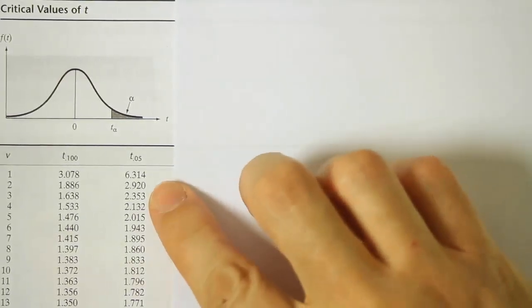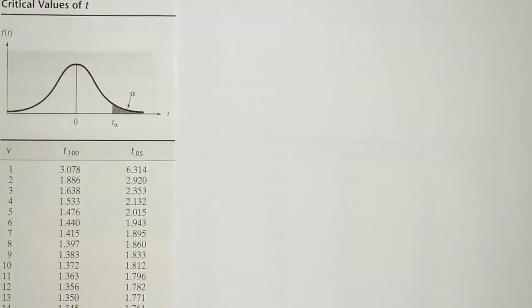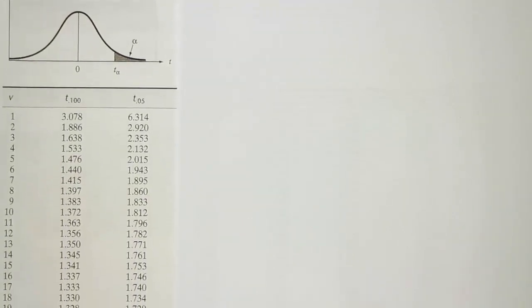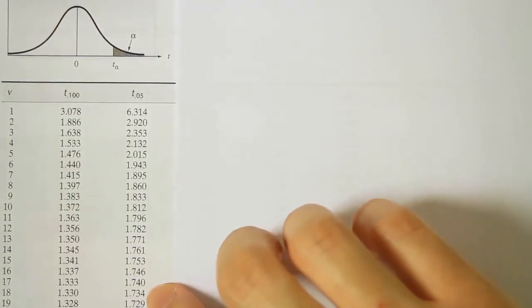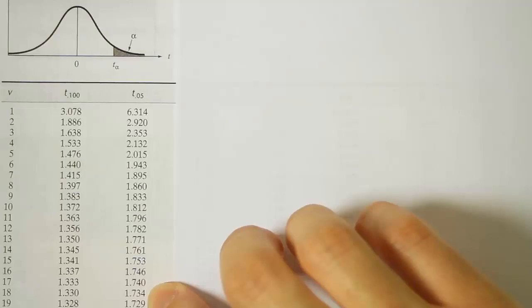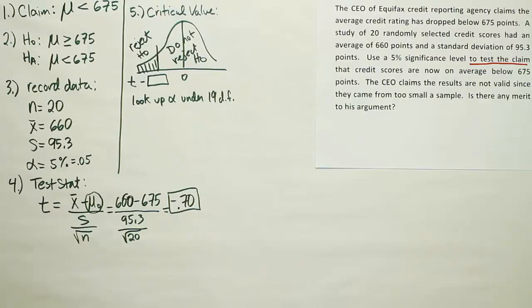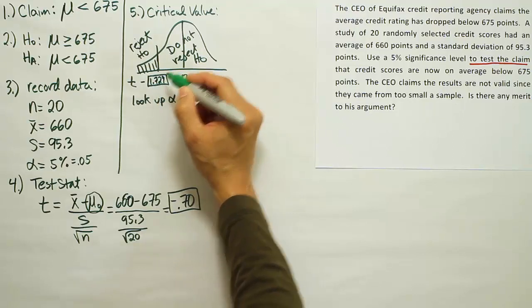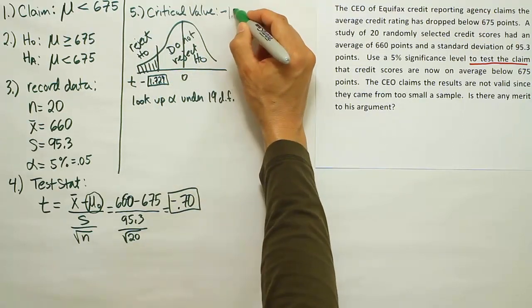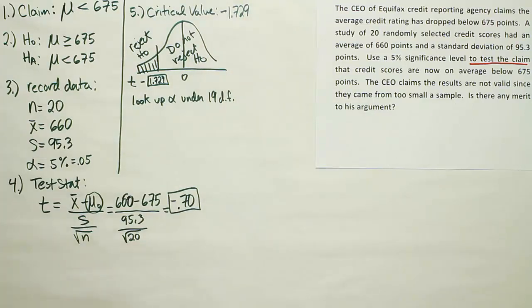So we're looking at the 0.05 column and 19 degrees of freedom. So there's the 0.05 column, and we're going to go down until we see 19 degrees of freedom. So we get the answer 1.729. Remember, it's on the left, so it's negative 1.729 for our critical value.